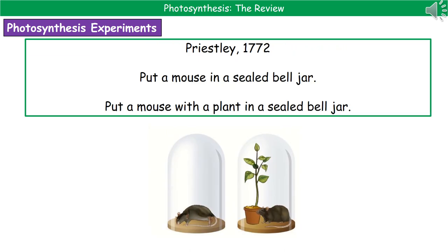So now we know what glucose is used for, how we make the glucose, and what photosynthesis actually is. But how do we know all this? The reason is that over the years, a whole range of different experiments have been carried out to get this knowledge. One of the first experiments you should be aware of was carried out by Priestley back in 1772.